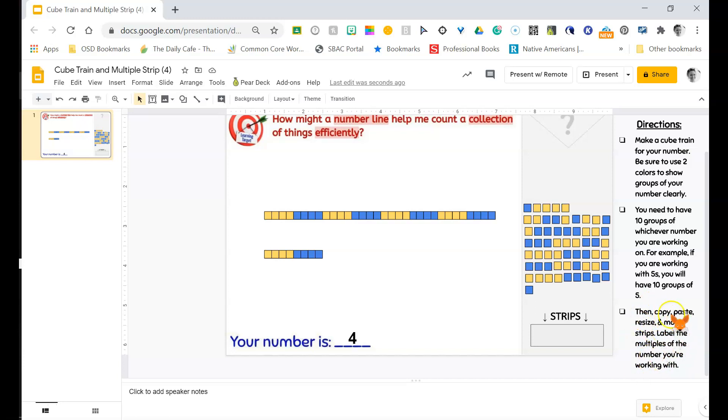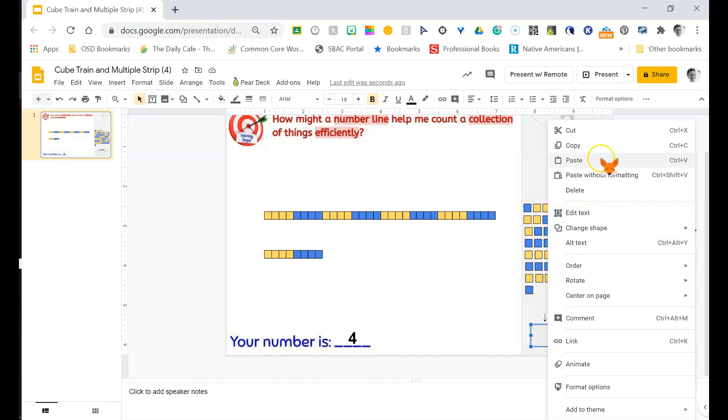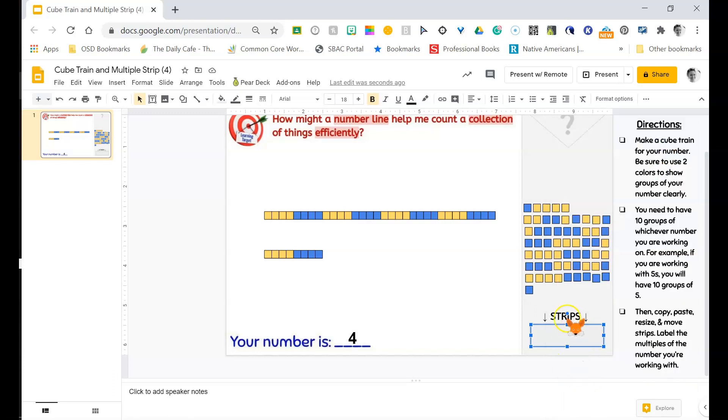Now all I need to do is copy, paste, resize, and move these strips. So remember that to copy and paste we are going to right click on the shape and we are going to hit copy or just like you see here you could hold down the control button and the C button at the same time. Once you've hit that your little strip is copied and now you need to paste it onto your slide.